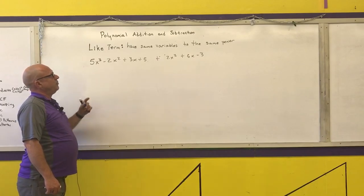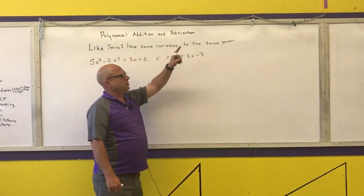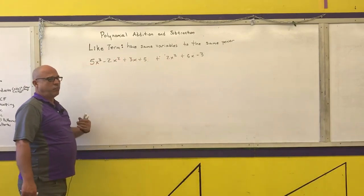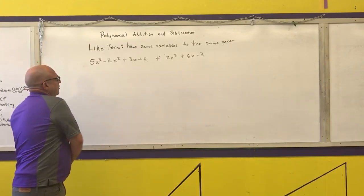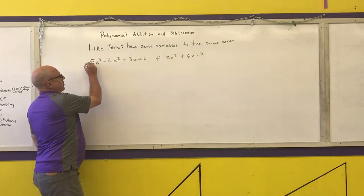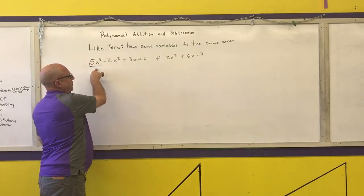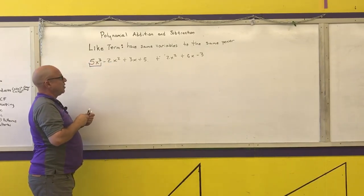Now what I want to do is find the same variables to the same power. I'm going to write this in standard form for my final answer. So I'm going to look for the highest degree terms I have here, and that highest degree term would be a 5x cubed. I'm going to combine those.